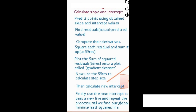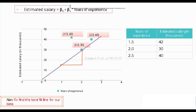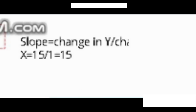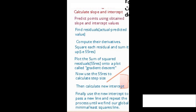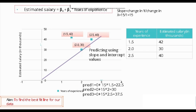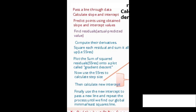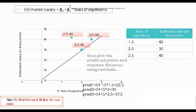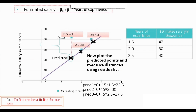Step 2: calculate slope and intercept values. The change in x is 1 and the change in y is 15, so for one unit change in x there is a 15-unit change in y — our slope becomes 15. Step 3: predict points using slope and intercept values by plugging in slope = 15 and intercept = 0 into the equation to obtain predicted values for each observation. Step 4: find the residuals — actual minus predicted values — plot the predicted points, and measure distances. The difference between the actual point and the predicted point is known as the residual.